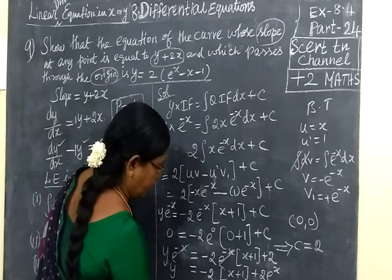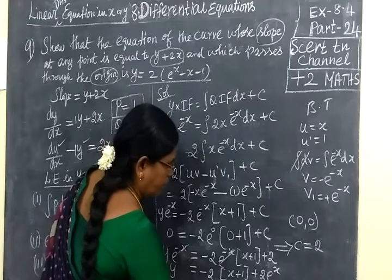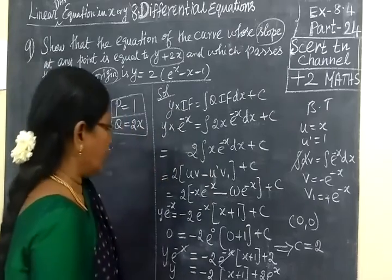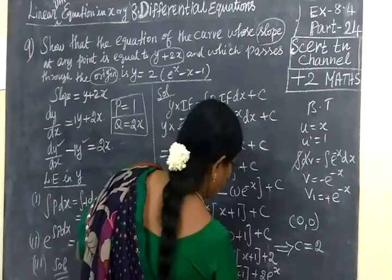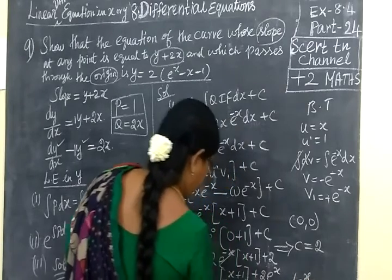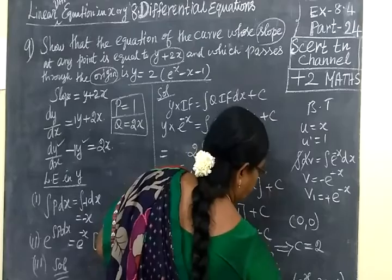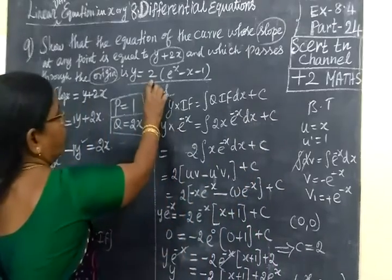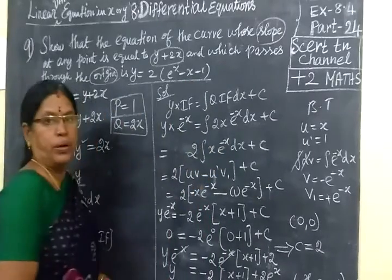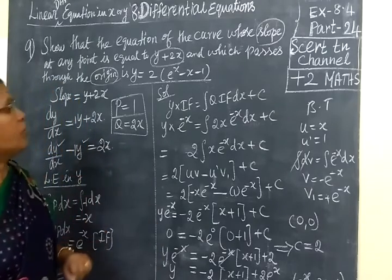Taking 2 common: y equal to 2(e power x minus x minus 1). So this is what we have to prove: y equal to e power x minus x minus 1 (with factor 2). This is a very important question, often asked in exams. Thank you.